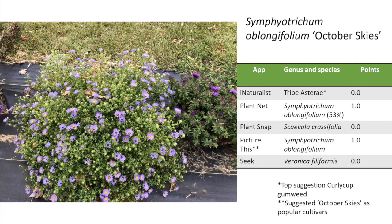Next is Symphyotrichum oblongifolium 'October Skies.' I chose this photo because it's not great — simulating a picture from afar. There are about 100 species of Symphyotrichum, which encompasses some aster plants. I wanted to use this photo because people often take photos from a distance without close-ups of the flower or leaves. Surprisingly, PlantNet and PictureThis did really well, getting it down to species level. iNaturalist knew it was some form of aster. Interestingly, PictureThis had even more information — it listed popular cultivars including 'October Skies,' although it doesn't identify down to cultivar level.